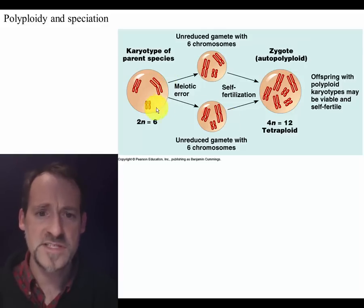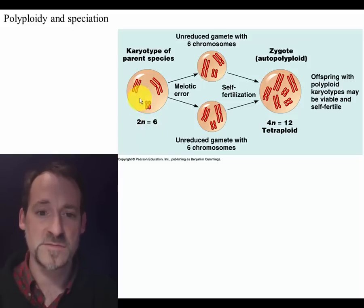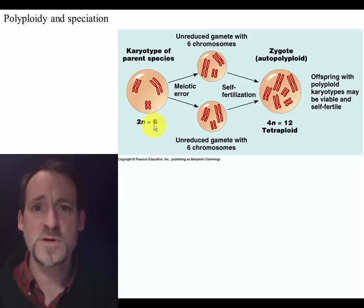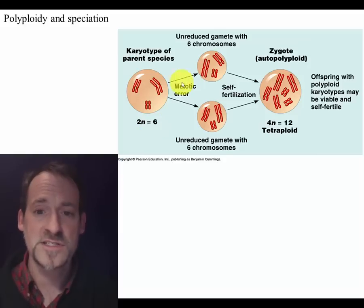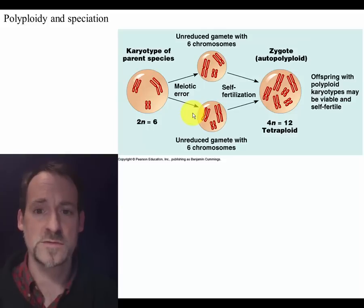In this case, you've got a parent species that has three different chromosomes. Two in diploid is six chromosomes total. Let's suppose there's some error in meiosis so that each one of the gametes gets all three of those pairs of chromosomes.